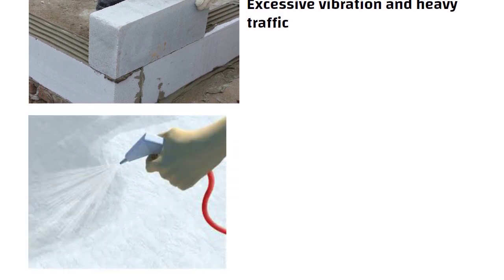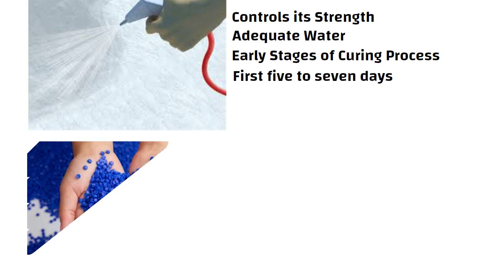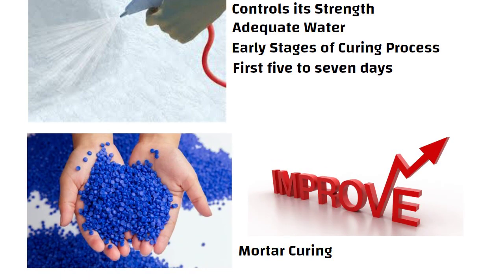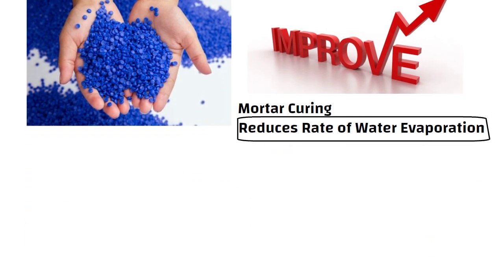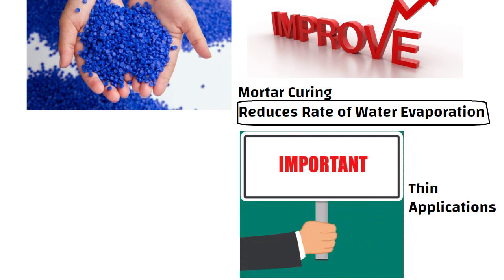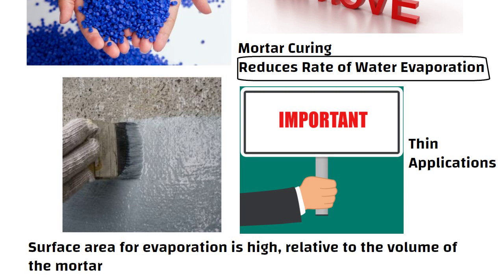Curing of mortar is one of the major factors that control its strength. It is required to provide adequate water to have proper curing, especially during the early stages of the curing process, roughly the first 5-7 days. Polymers improve mortar curing because it reduces the rate of water evaporation. This reduced rate of water evaporation is especially important in thin applications, where the surface area for evaporation is high relative to the volume of the mortar.